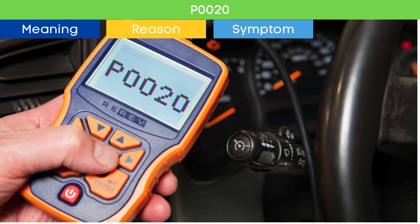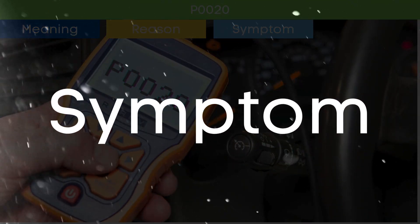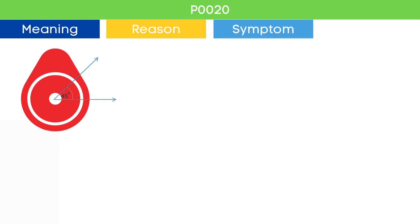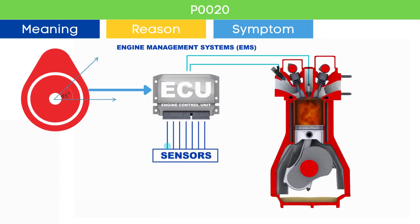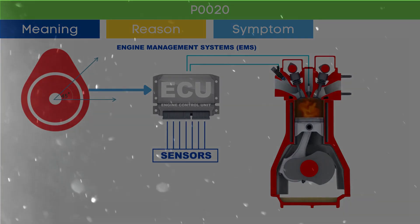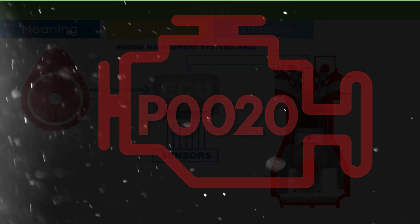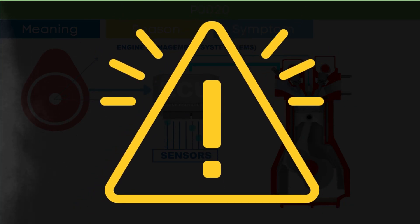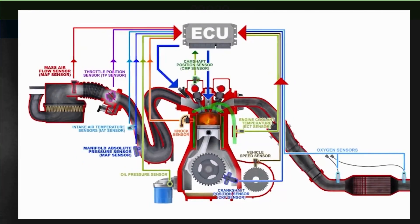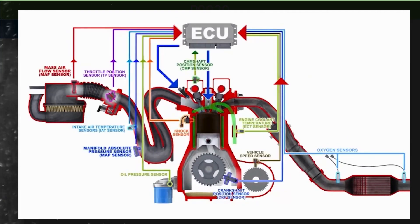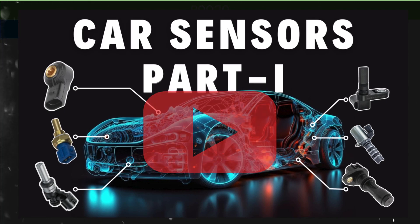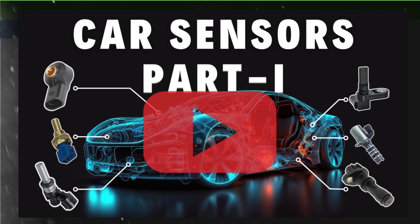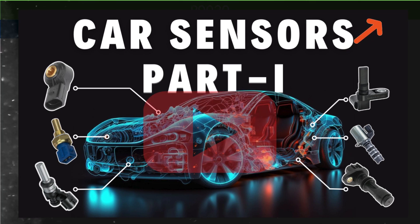Now that we know what the P0020 OBD2 code is, let's dive into the symptoms of P0020. Cam angle is a very crucial parameter in engine management systems to optimize the engine's performance. The ECU also relies on other EMS sensor inputs. To learn more about sensors of the engine management system, you can check our detailed video on car EMS sensors — the link is in the corner.